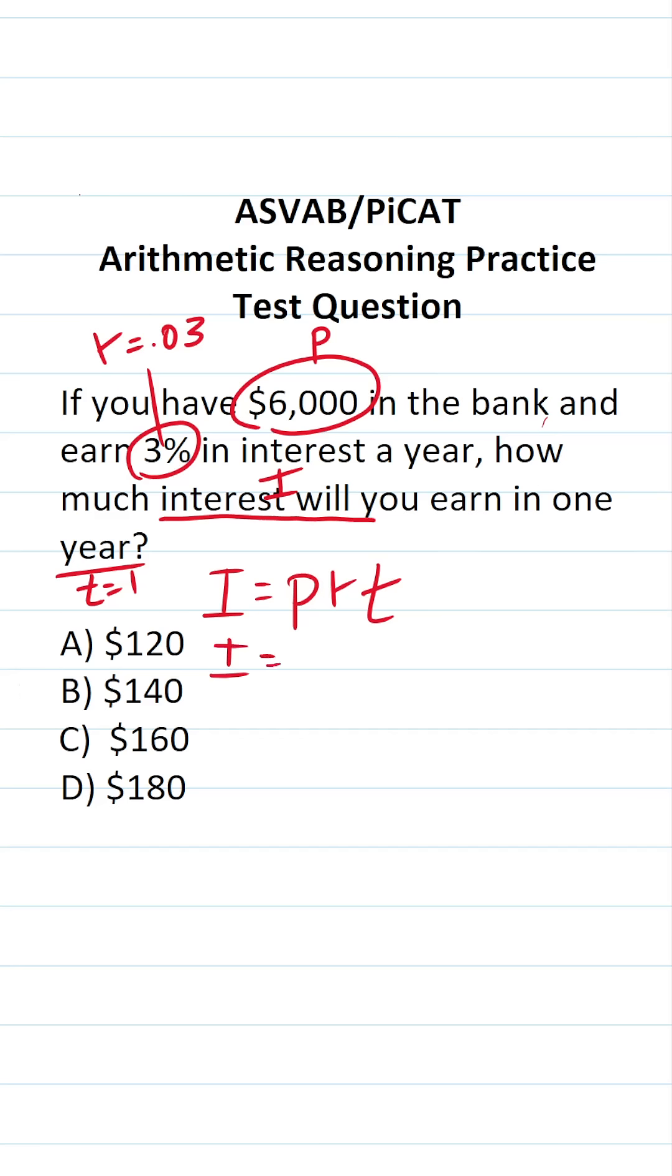We're solving for I. Our principal is $6,000. Our interest rate is 3% or 0.03 times one for one year. 0.03 times one is just 0.03, so this becomes 6,000 times 0.03.